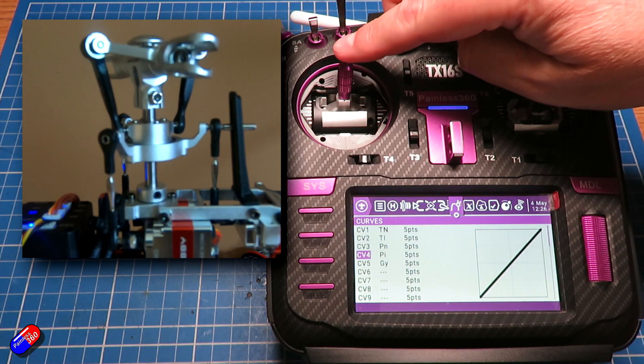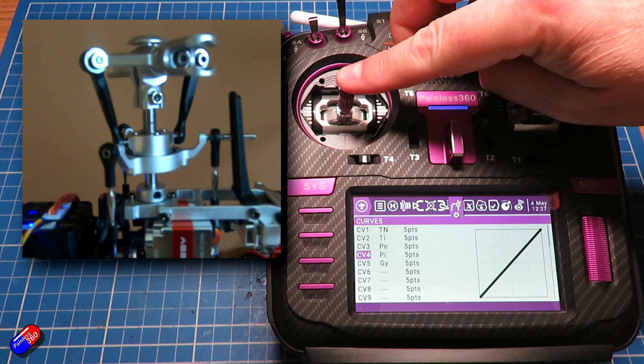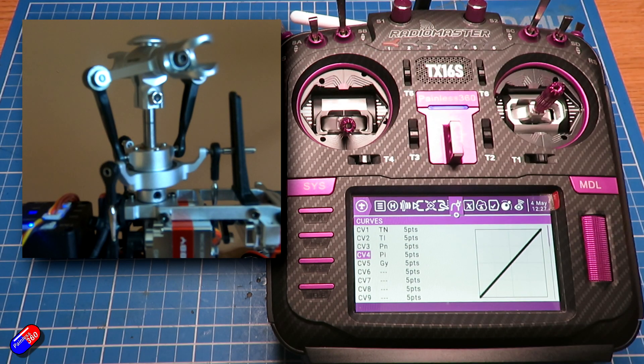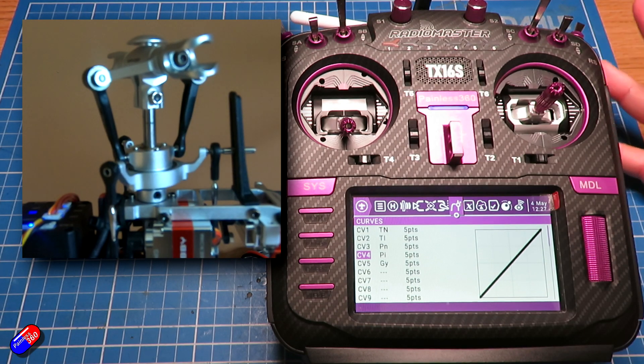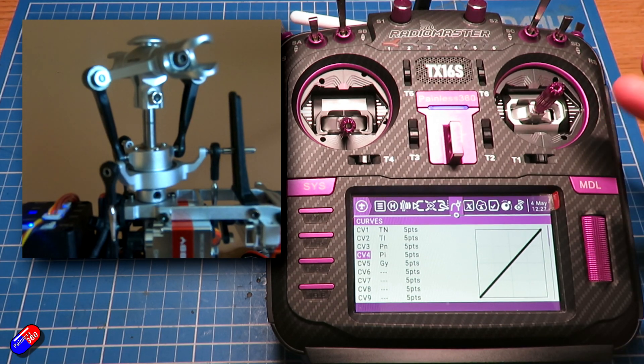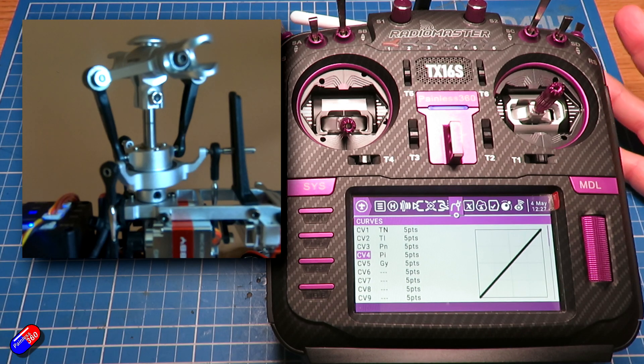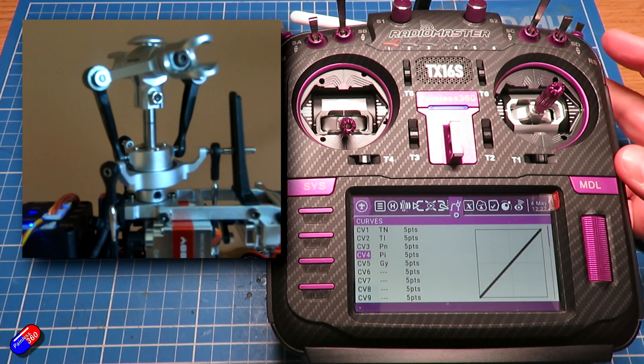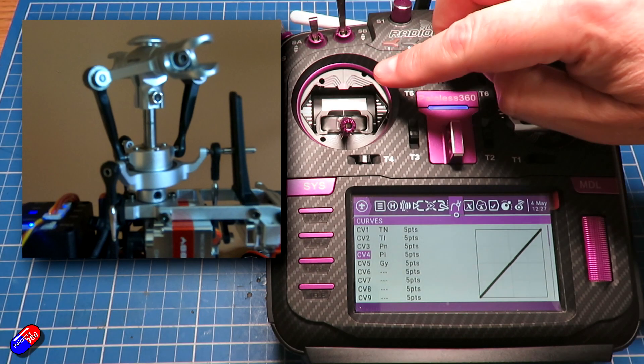Now typically on a helicopter you're going to have something like plus 11 degrees positive pitch to zero to minus 11, and this allows you to do full 3D. Why would you want negative pitch of that amount? Well it means you can do things like fly upside down. You can do very aggressive stops and all that stuff as well.